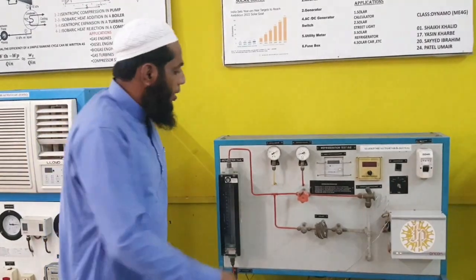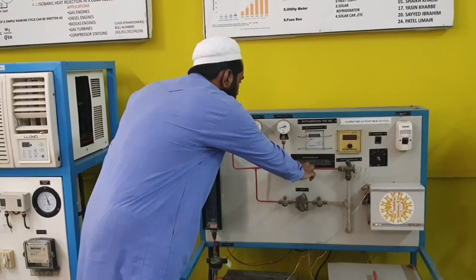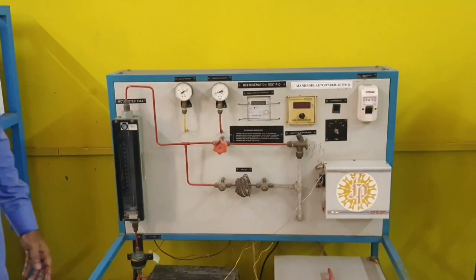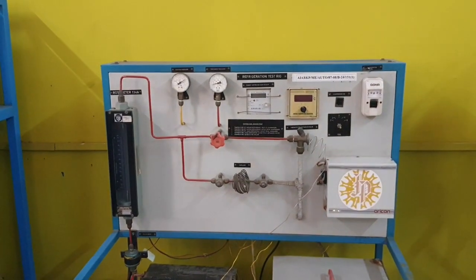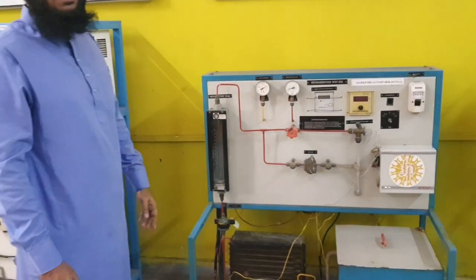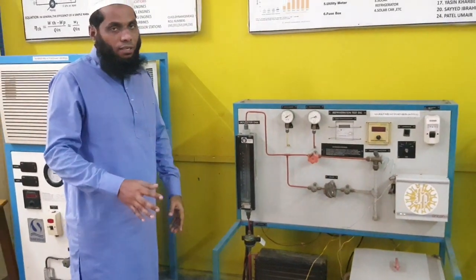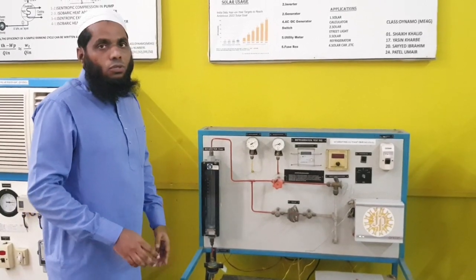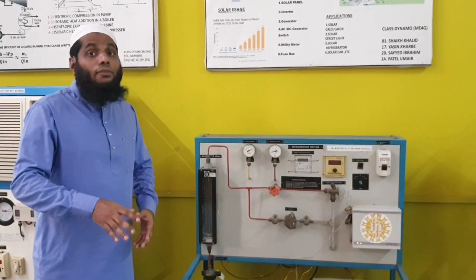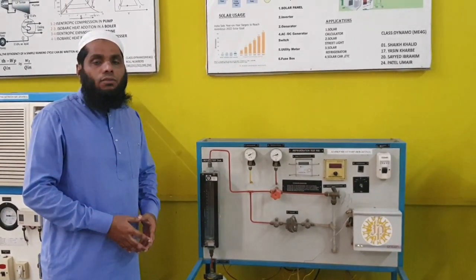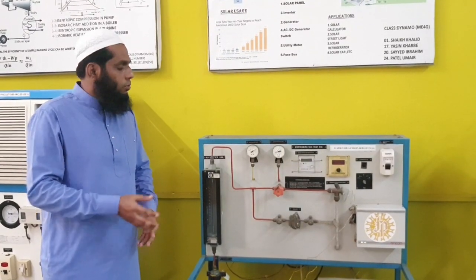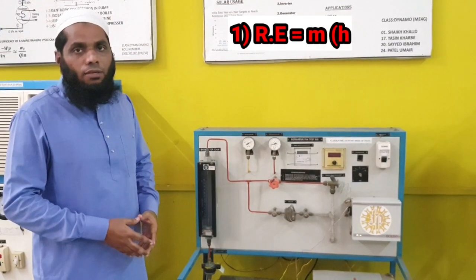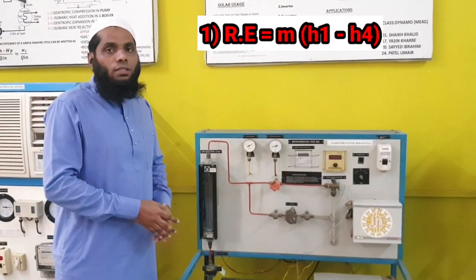After that, we determine the evaporator zone values. We measure the temperature of the liquid refrigerant before the evaporator, which is coming from the expansion device. For that, we have enthalpy value H3, and since H3 and H4 are the same, H4 is also determined. The refrigerating effect is the cooling effect produced inside the evaporator, which is M — mass of refrigerant — multiplied by H1 minus H4.